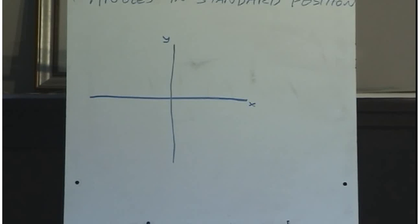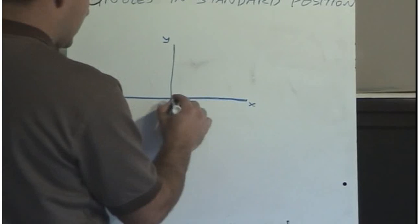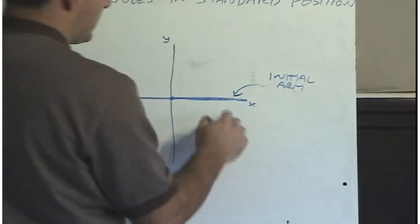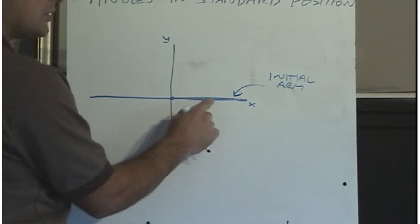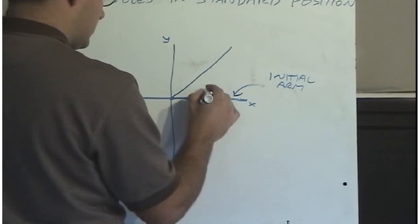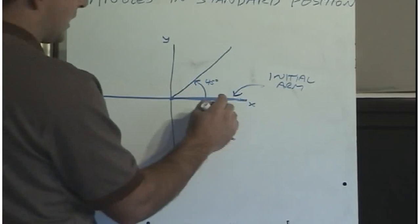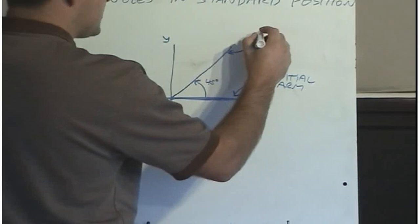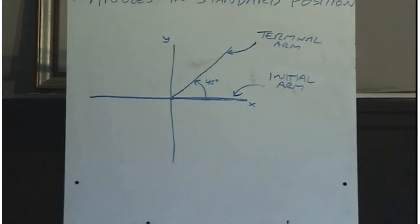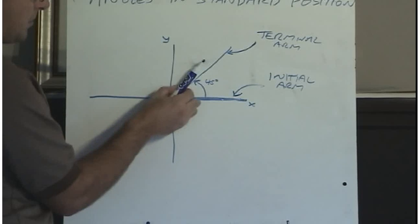Let's take a look at how we would draw angles in standard position. Here's our xy-axis. The positive x-axis is what we call our initial arm — all angles are measured from this line. If I draw the angle 45 degrees, I measure 45 degrees from my initial arm. The line where the angle ends up is the terminal arm. I started at the initial arm and rotated to end up at the terminal arm, measuring an angle of 45 degrees.